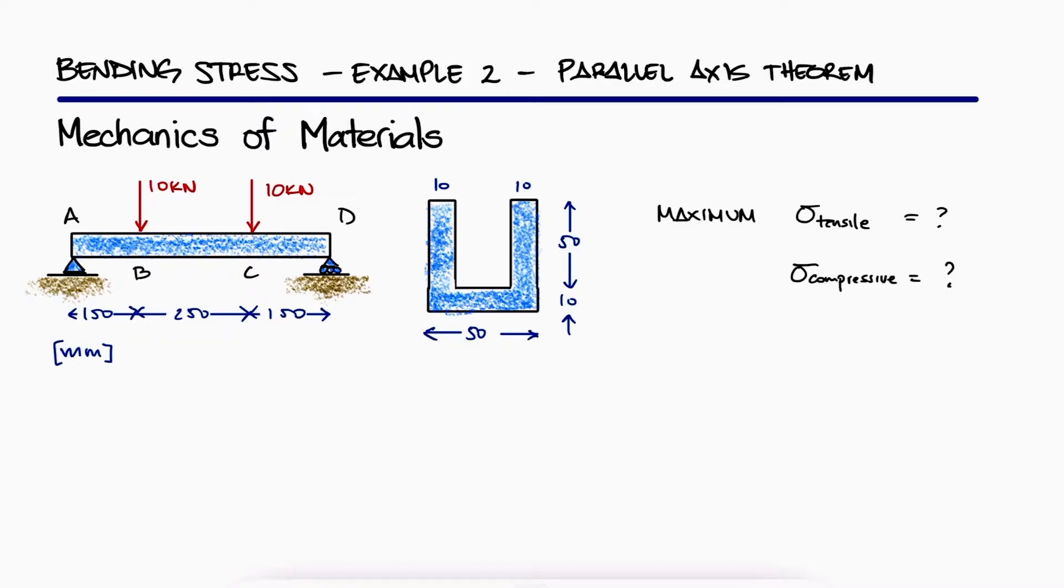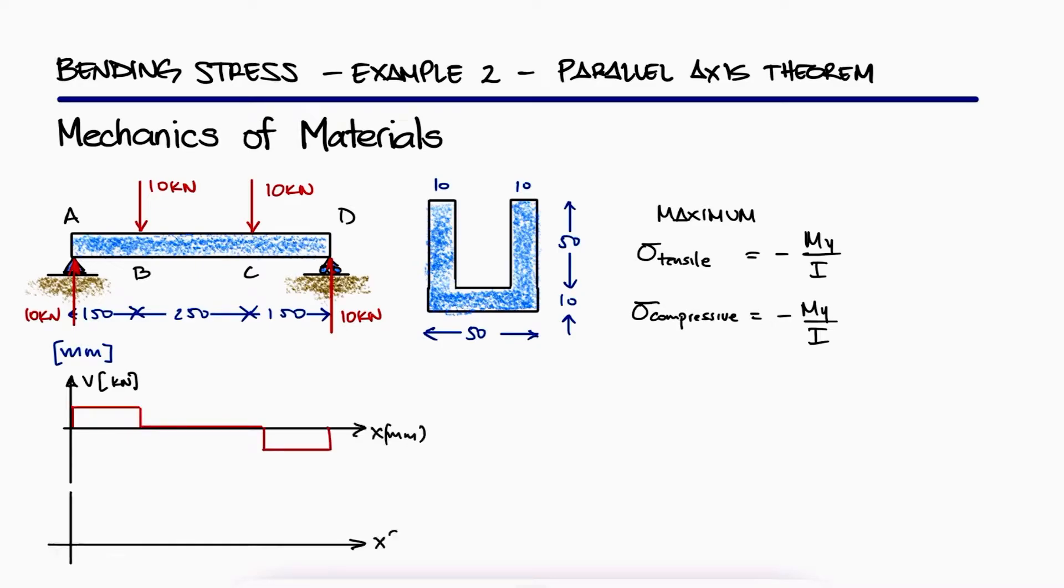The links to the other examples and that main video are in the description below. Just like we did during the previous example, we'll start by writing out the expression for the bending stress. To find the moment M, we'll find the reactions at A and D and draw shear and bending moment diagrams.